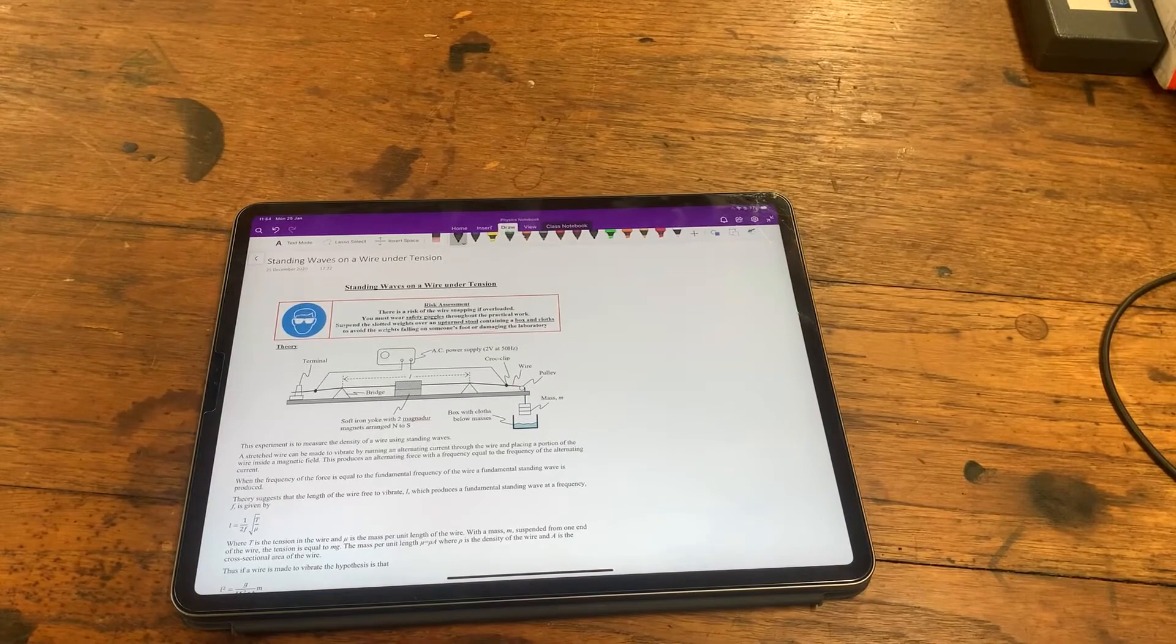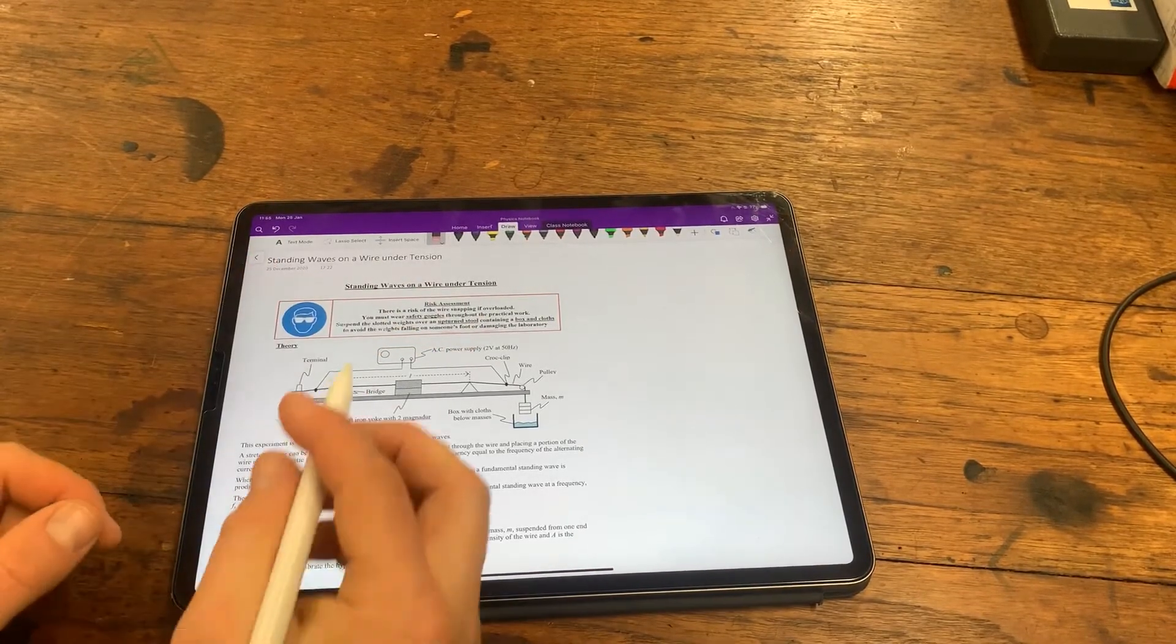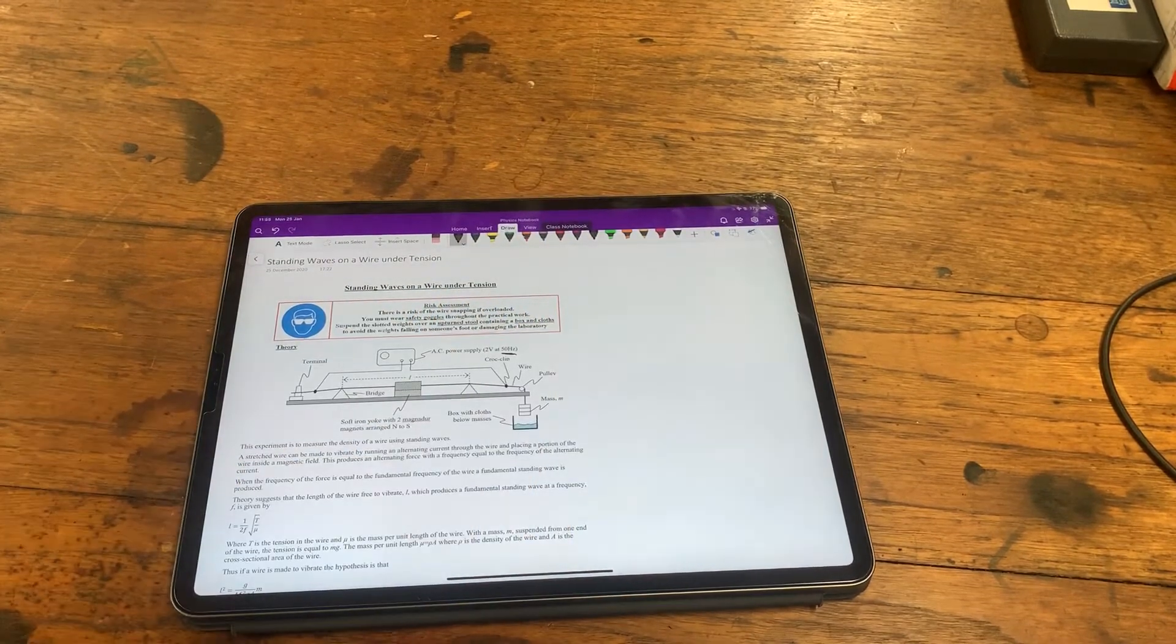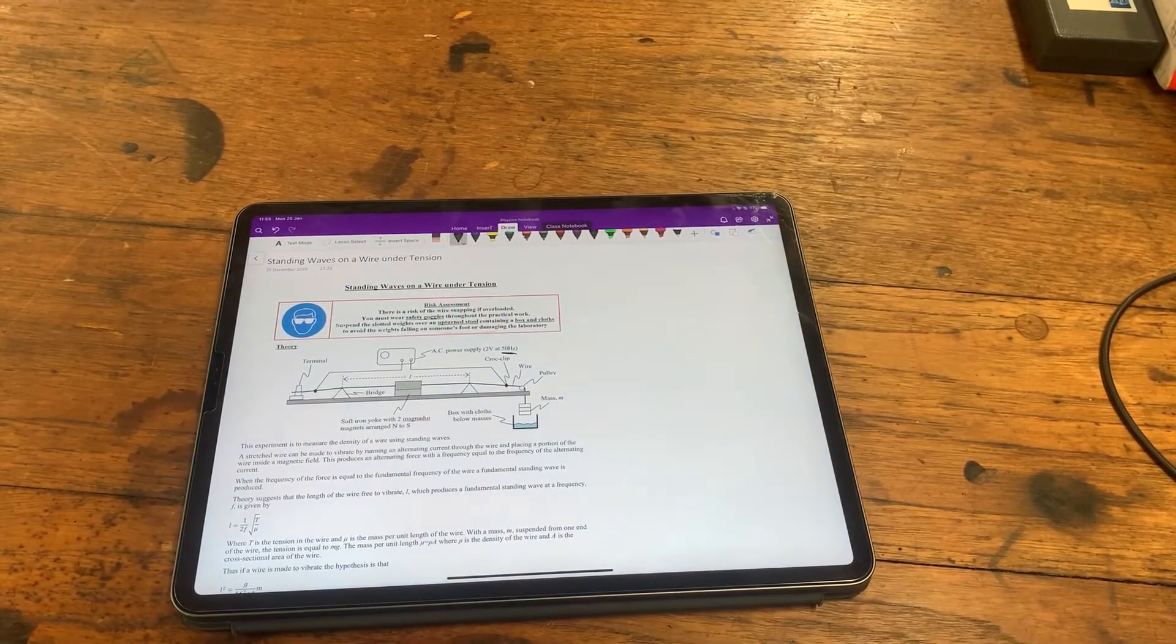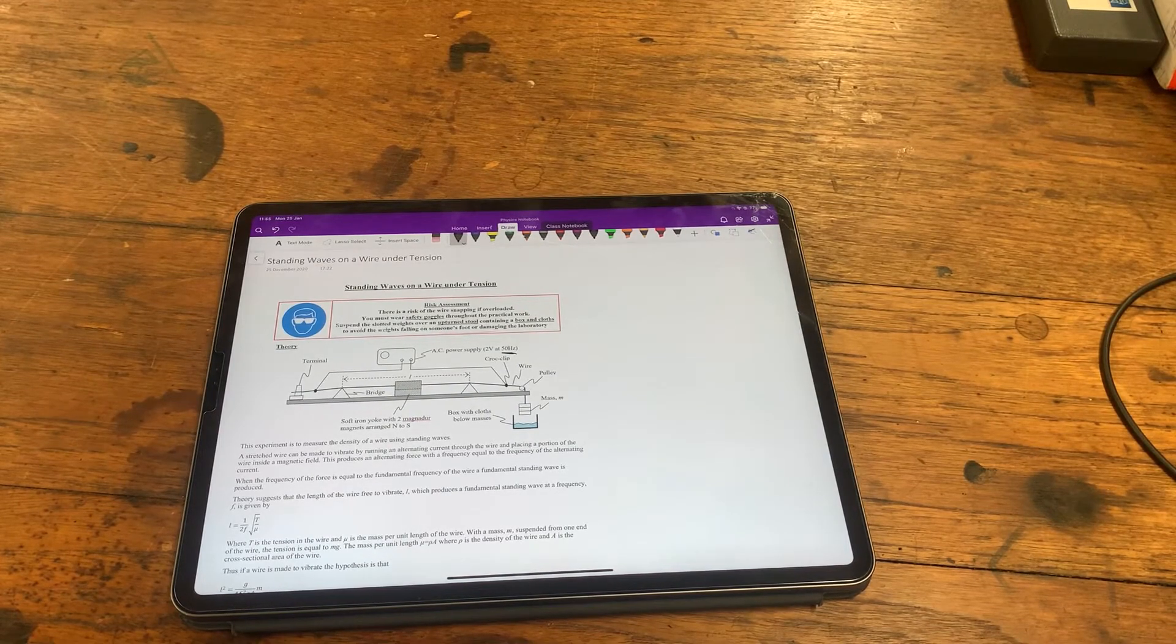Let's now look at the results. You'll see that the AC supplier was using has a frequency of 50 hertz. I've checked that with an oscilloscope and to the nearest hertz that's correct, so take the frequency to be 50 hertz.